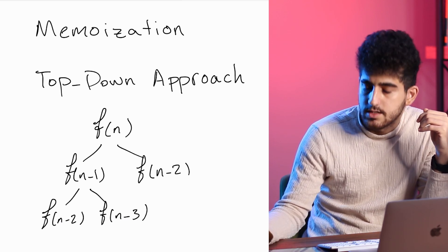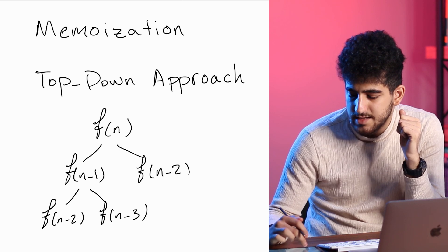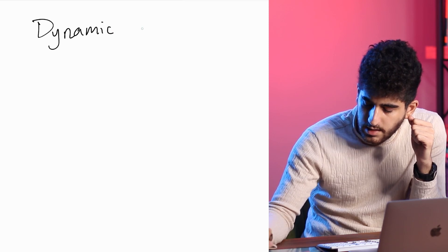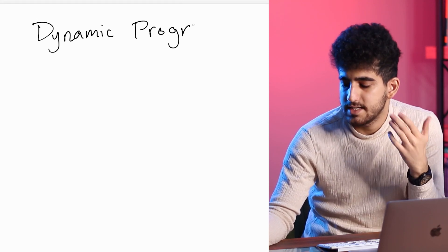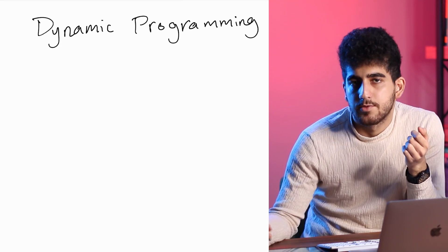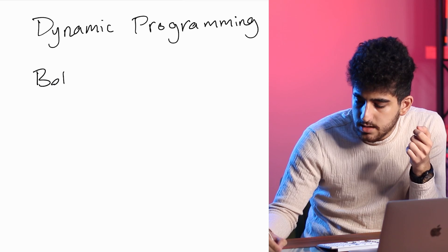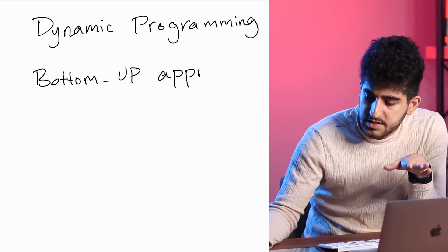So this approach is the top-down approach. There is also another approach that we call dynamic programming. The previous approach was kind of dynamic programming as well, but it is better to implement dynamic programming using this new approach, which is called the bottom-up approach. This time we start from the bottom — from the smallest value — and go to the top, calculating all the numbers.